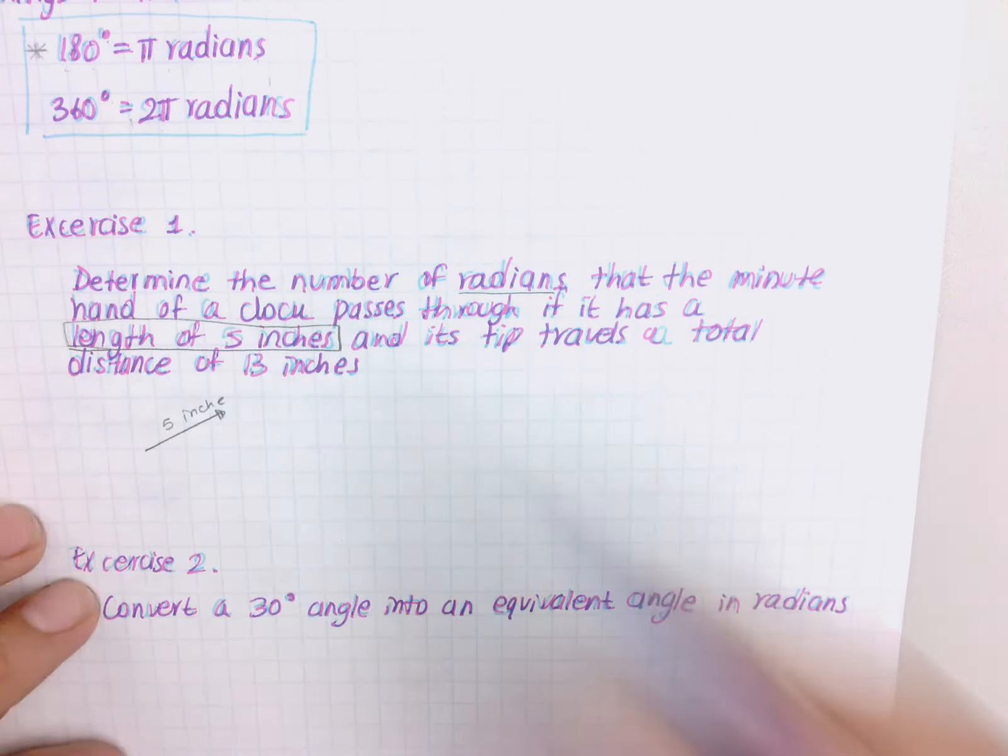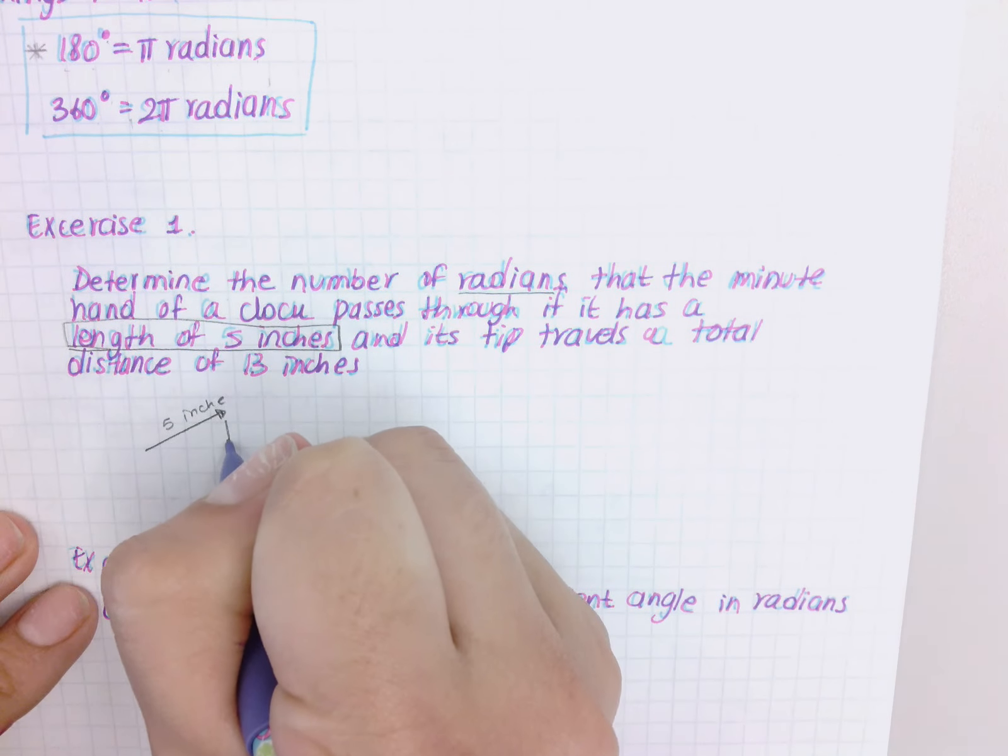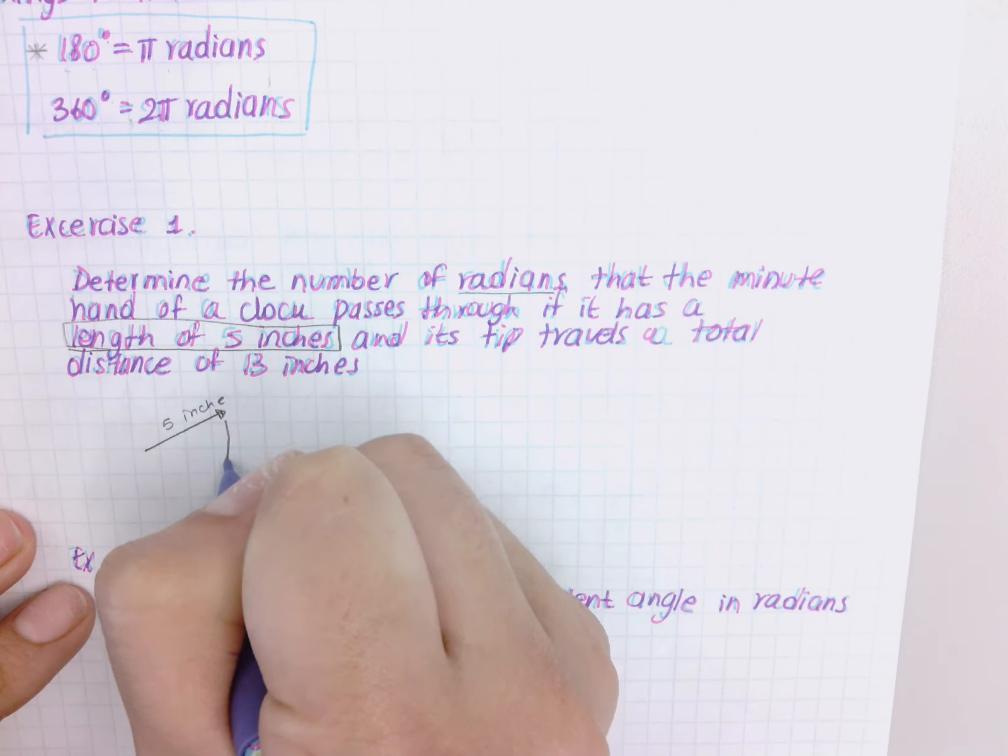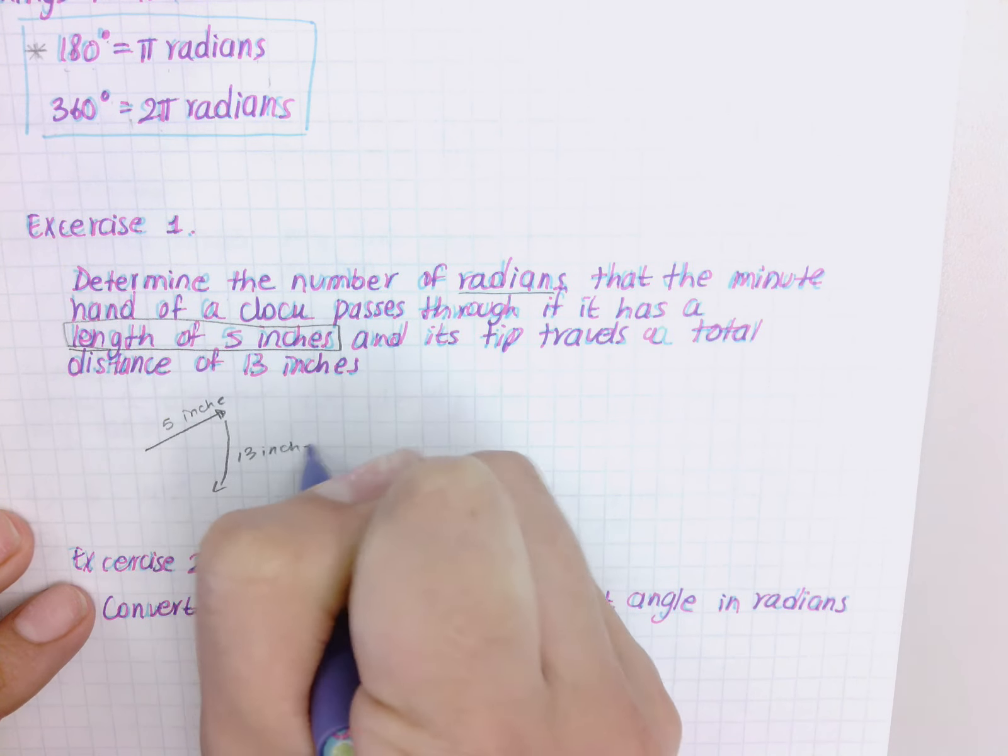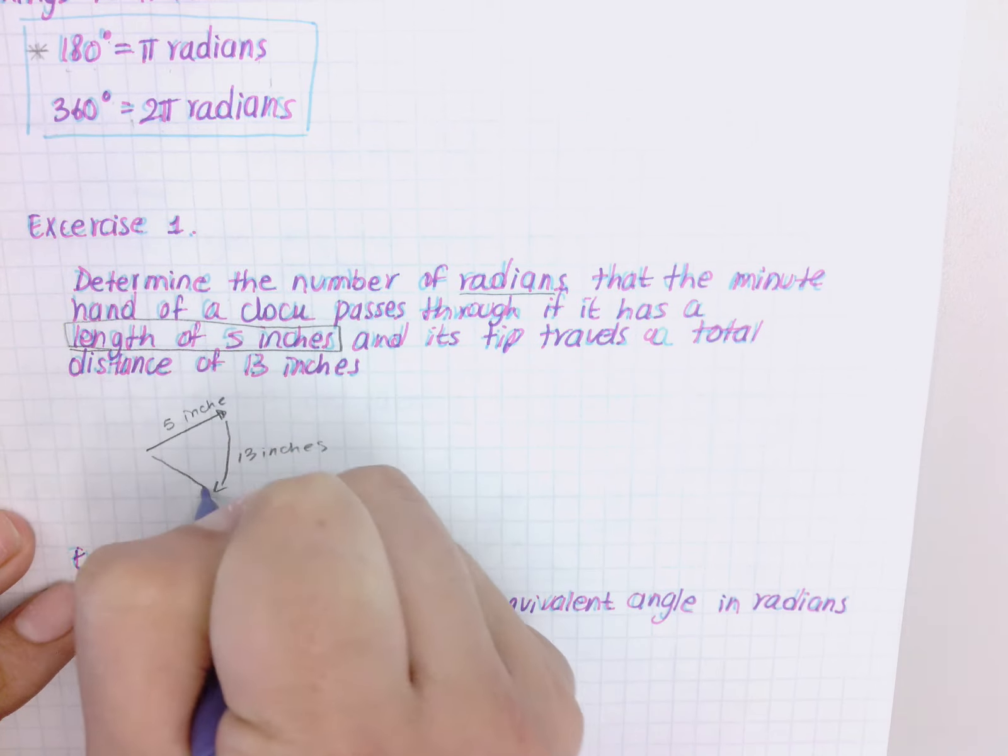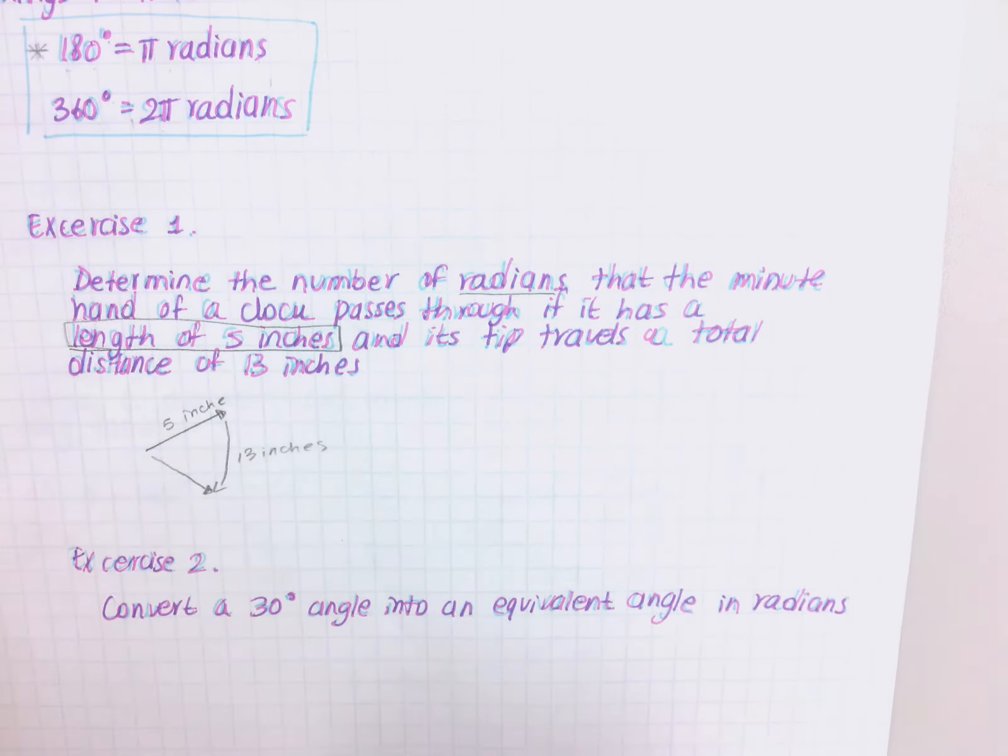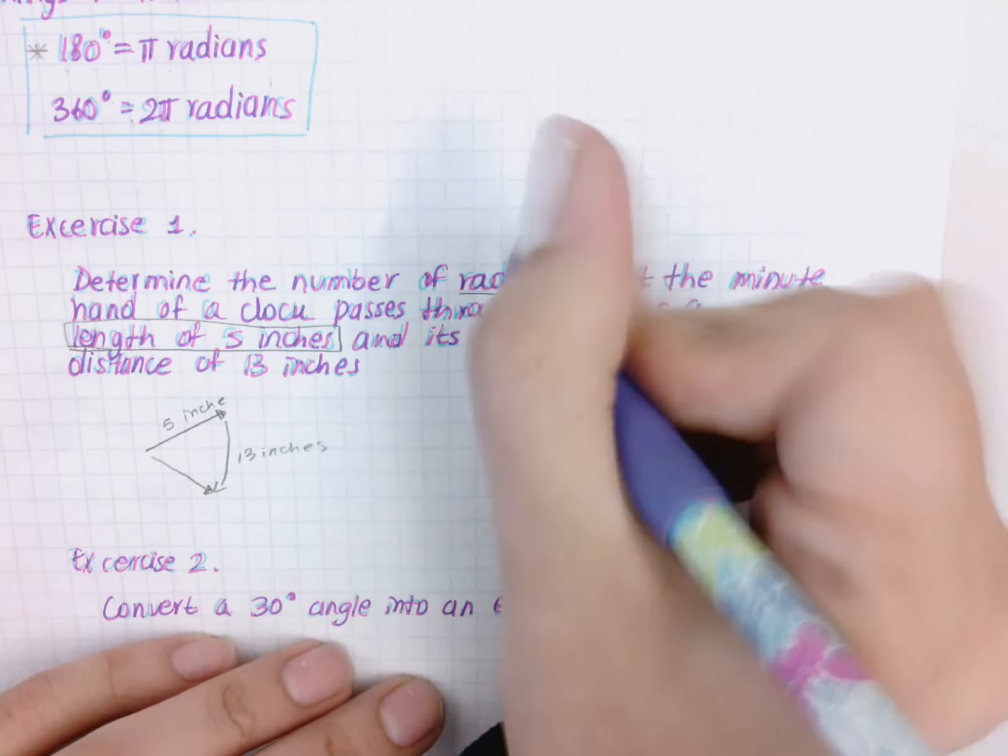And this tip travels - so this is going to travel a distance of 13 inches. So it's traveling 13 inches until it's going to reach this location right here, and I want to find the number of radians.